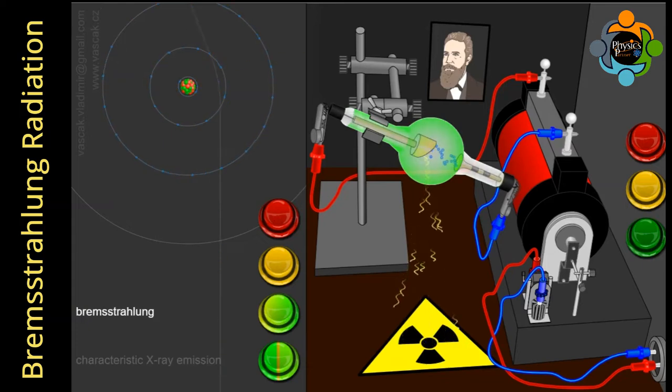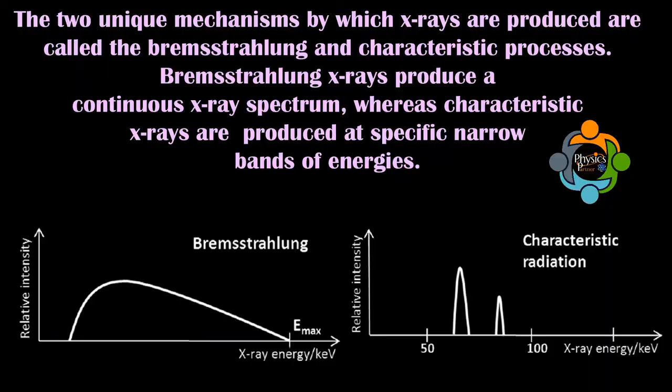The continuous spectrum formed due to bombardment of electrons lies in the x-ray region of the electromagnetic spectrum. Let's talk about the difference between bremsstrahlung and characteristic radiation. The two unique mechanisms by which x-rays are produced are called bremsstrahlung and characteristic processes. Bremsstrahlung x-rays produce a continuous x-ray spectrum, whereas characteristic x-rays are produced as specific narrow bands of energies.